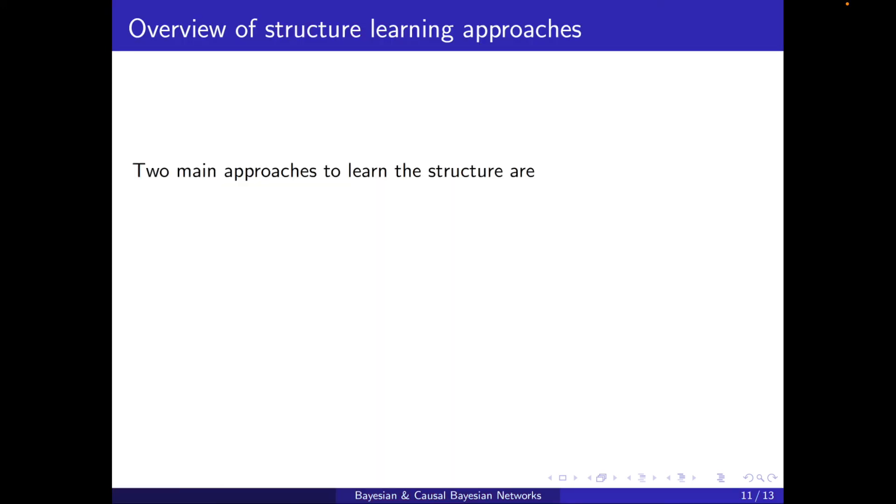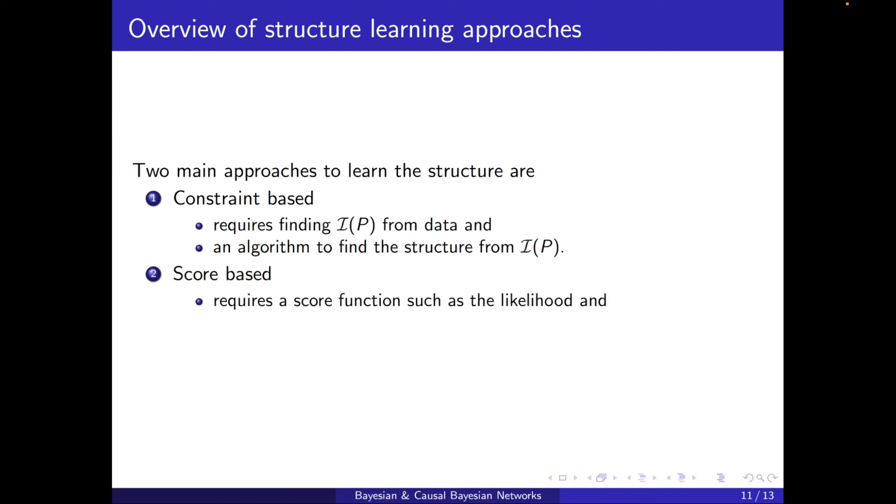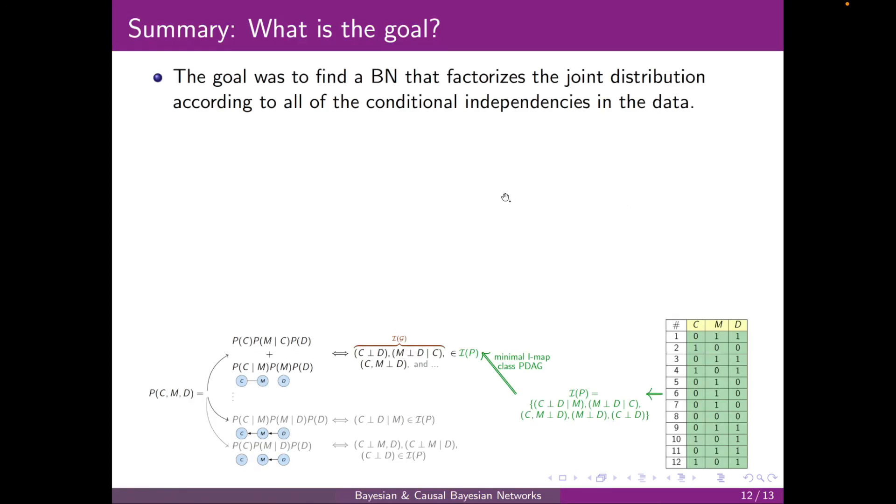Okay. So overview of what we covered here. There were two main approaches to learn the structure. One was constraint-based, and this requires finding the conditional independencies from the data and also an algorithm to find the structure from I(P). The score-based requires a score function, such as the likelihood, and also it requires an algorithm to find the structure that maximizes the score.